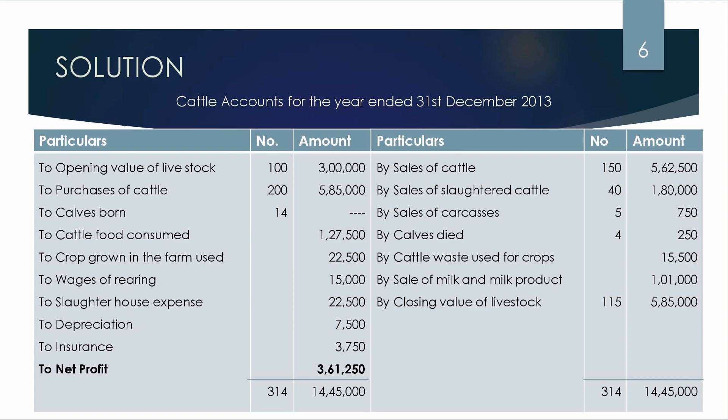Closing stock: closing value of cattle is 115. We have a closing value of cattle balance in the account. We have the debit side and net profit. The net profit is transferred to general profit. If you have a balance, you have a tally. If you have debit side you will have calves; if you have credit side you will have a balance.